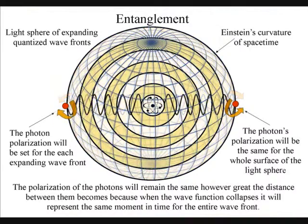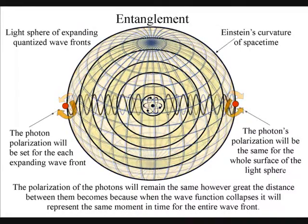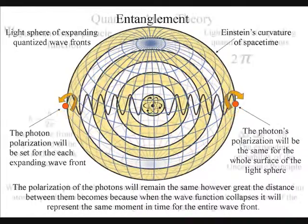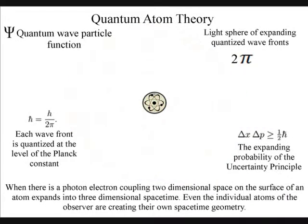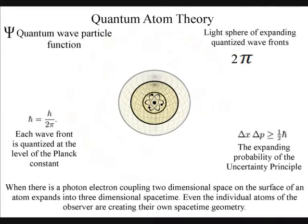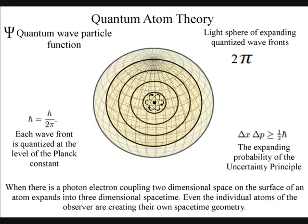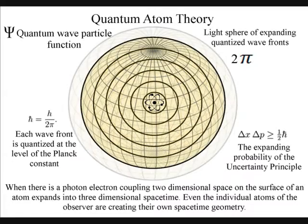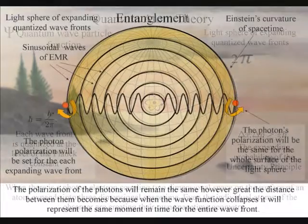We have entanglement because the polarisation will be set at the creation of each expanding wavefront. The wavefront will expand in the form of a light sphere, and the polarisation will remain the same for the entire surface of the light sphere, no matter how large it becomes.